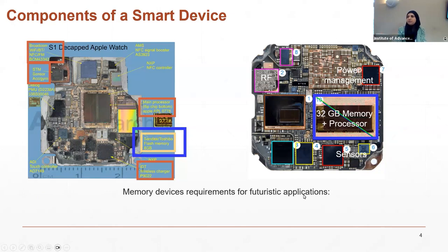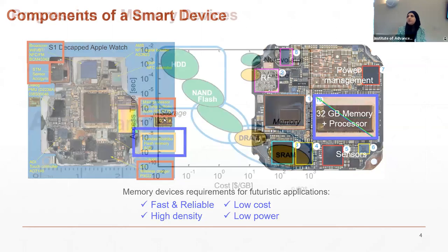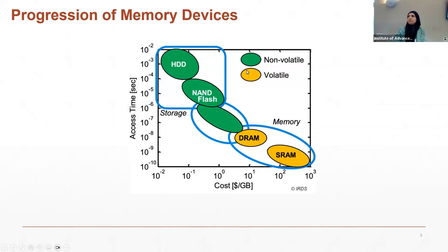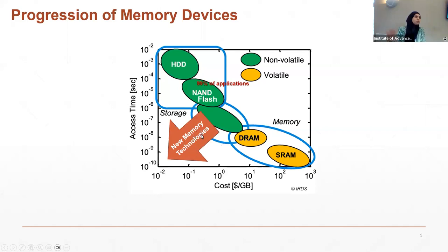Futuristic applications have specific requirements on memory devices — they must be fast, reliable, high-density, low-cost, and low-power. Memory devices can be divided into two main categories: non-volatile and volatile, where volatility means data is lost when power is turned off. The NOR flash, currently used in more than 99% of applications according to the International Roadmap of Devices and Systems, comes at low cost but provides slow access time. DRAM is volatile but has much faster access time at a higher cost.